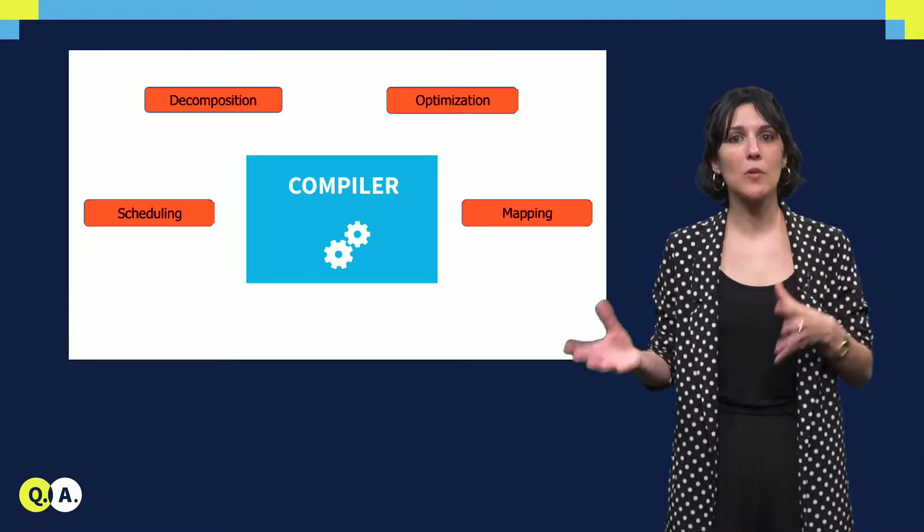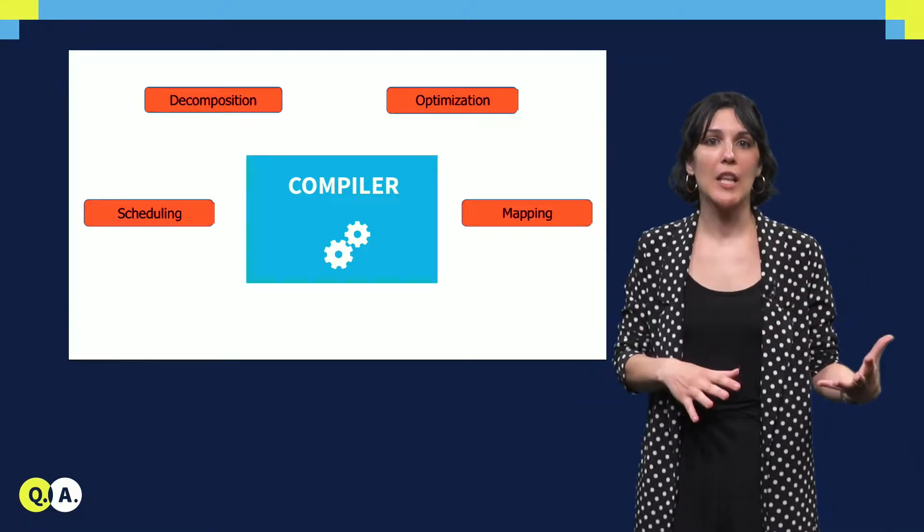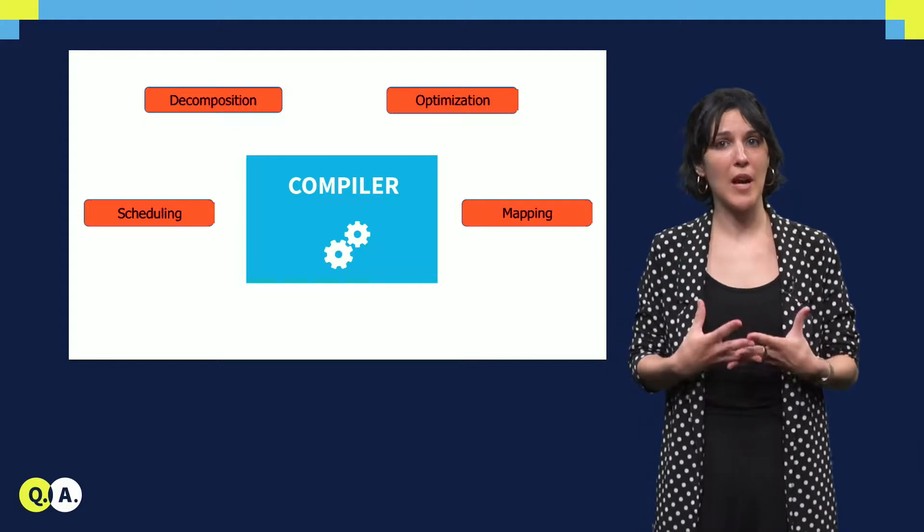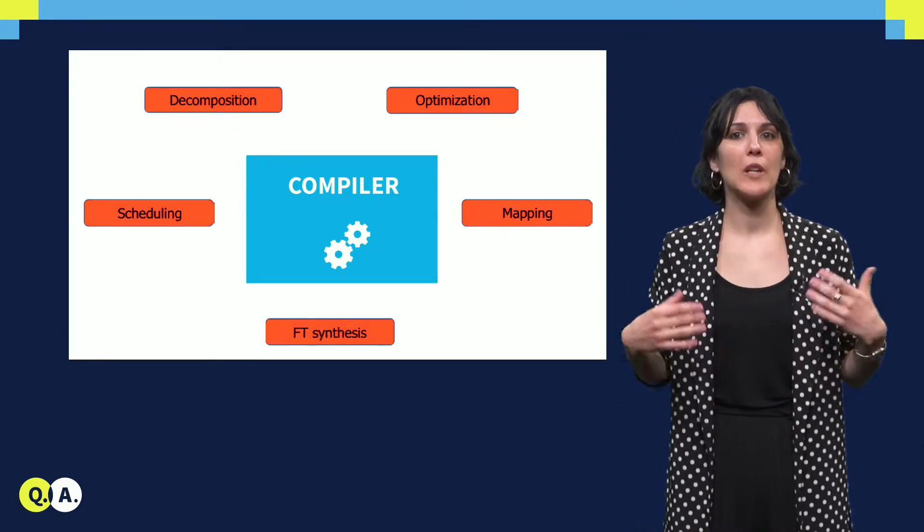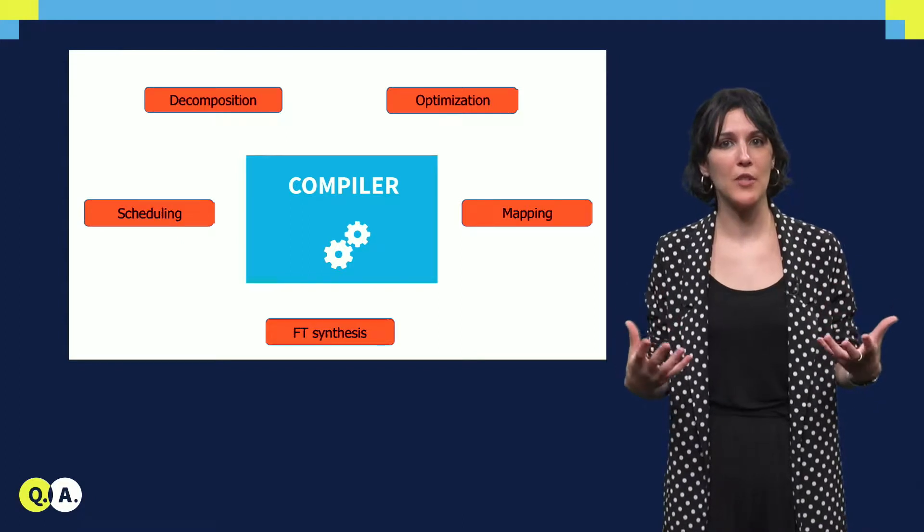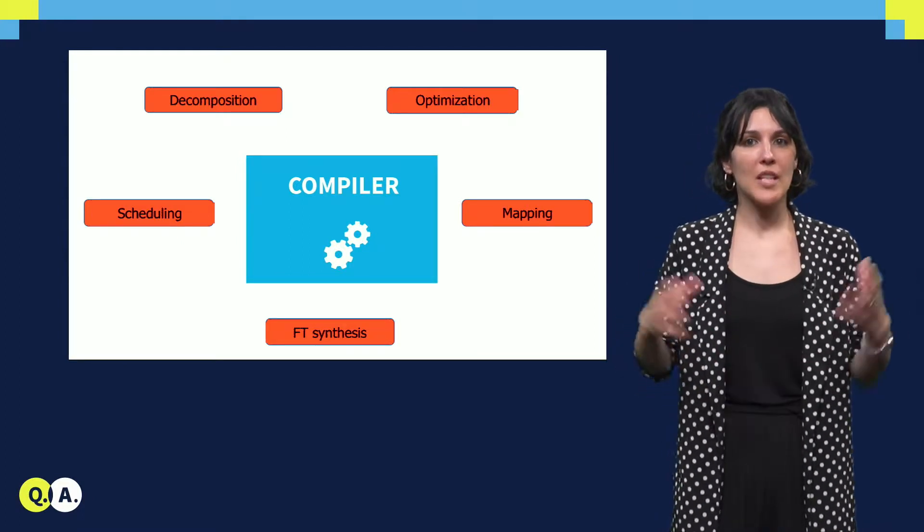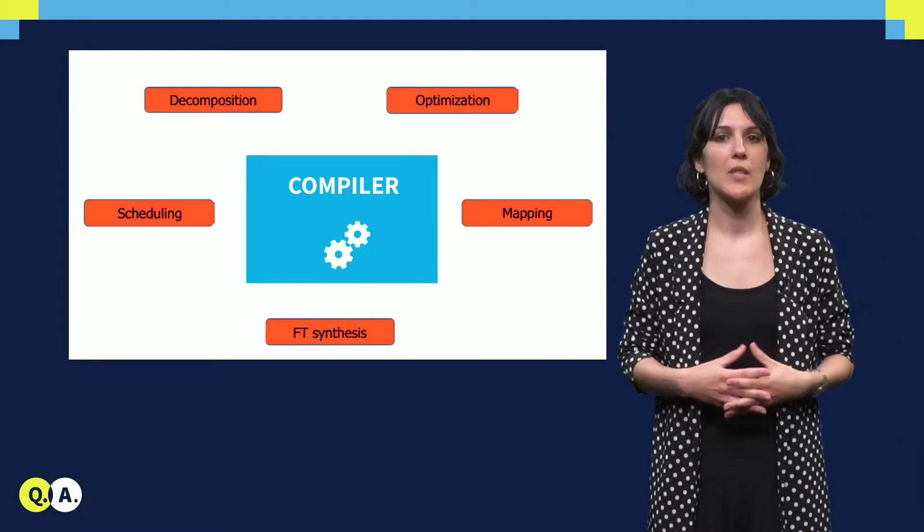It will map the quantum circuit so that the constraints of the chip are satisfied, and it will create a fault-tolerant version of the circuit. So let's explain all these steps by showing some examples.